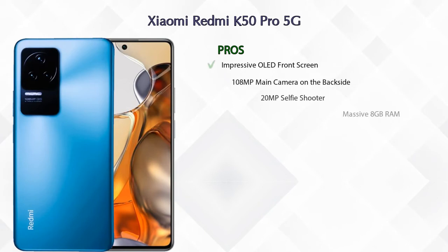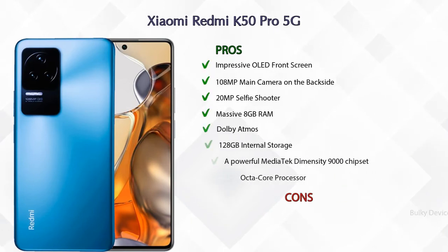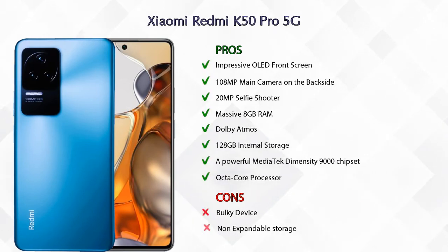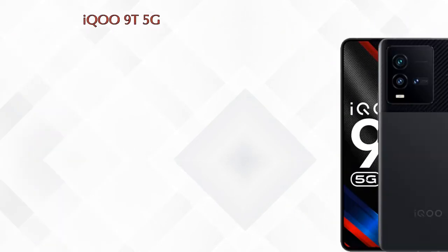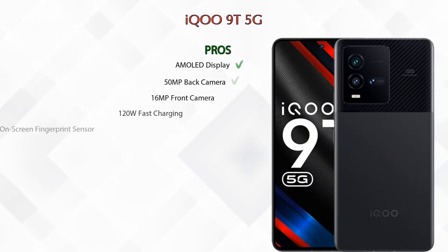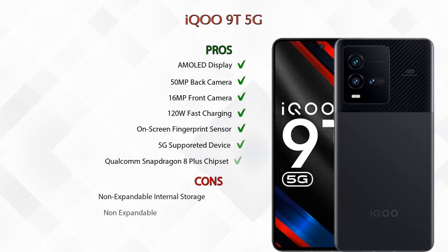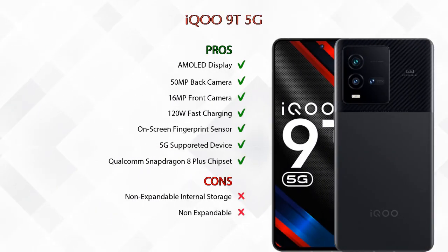Friends, now let's talk about pros and cons. The Xiaomi Redmi K50 Pro 5G has eight pros and two cons, while the iQOO 9 5G has seven pros and two cons.